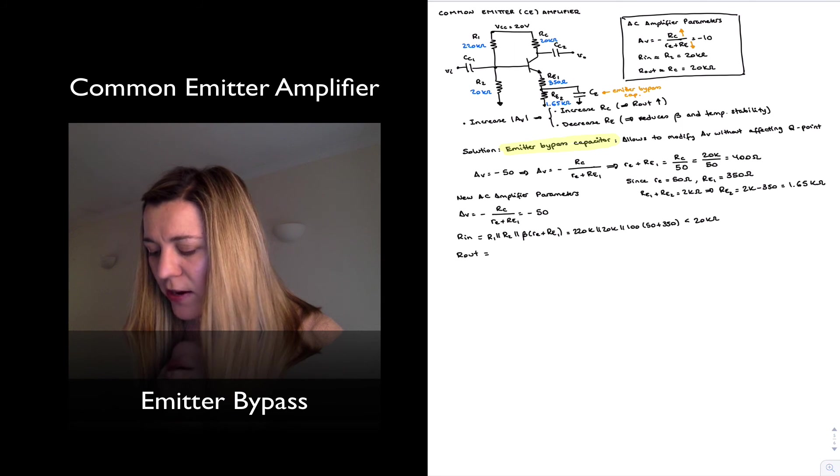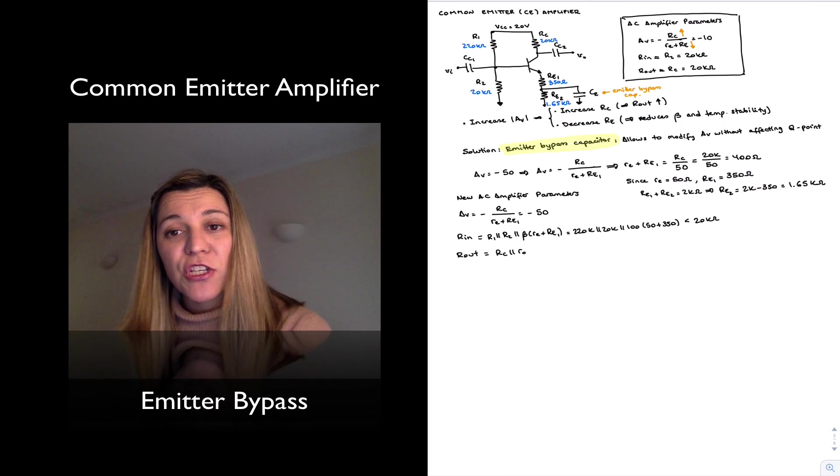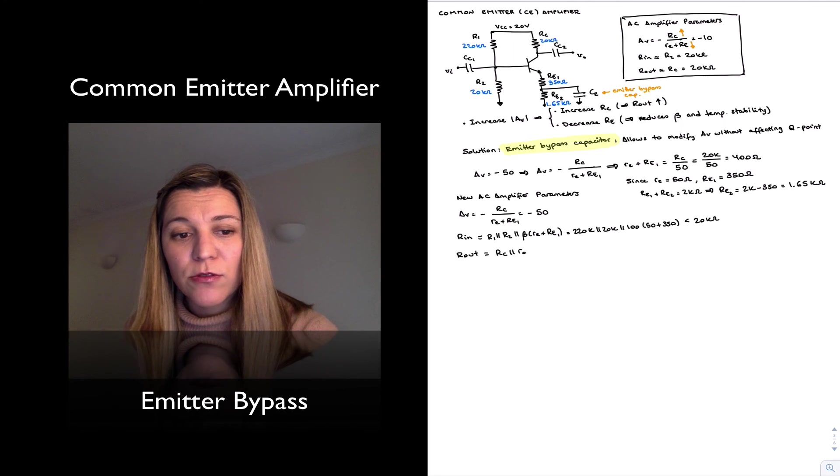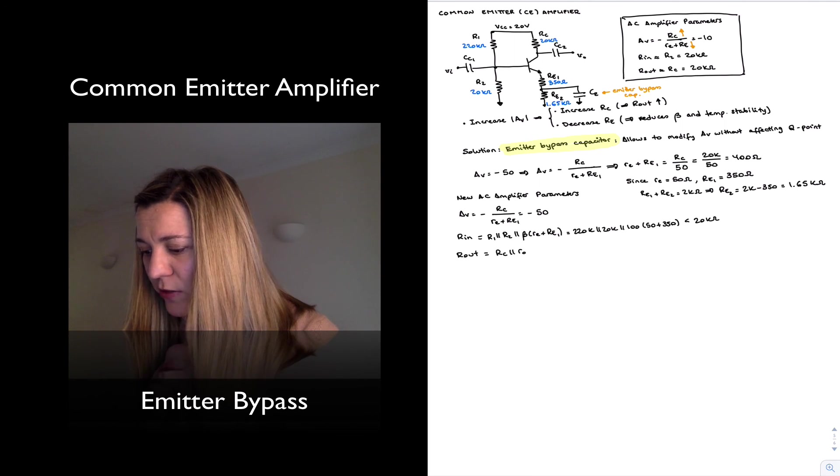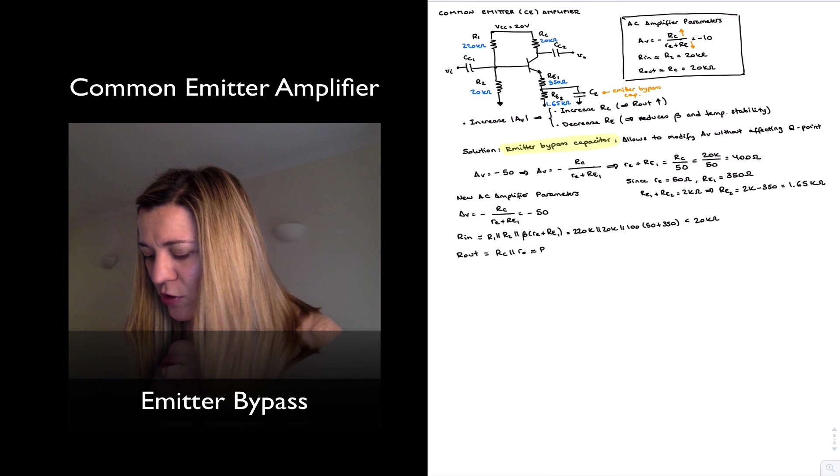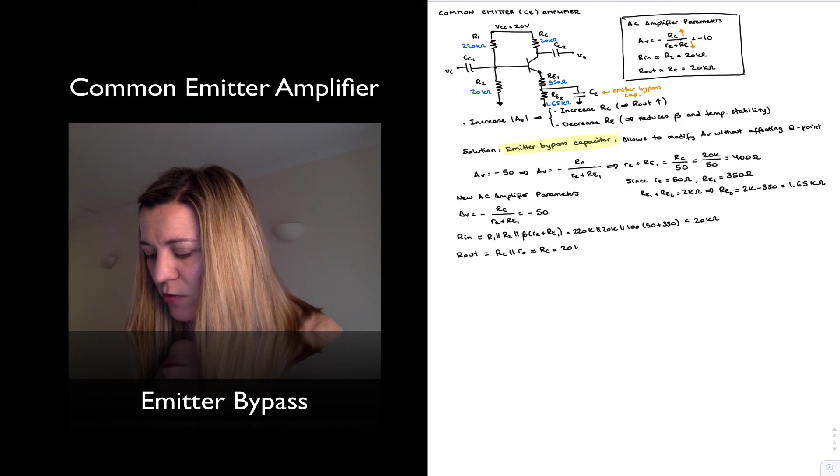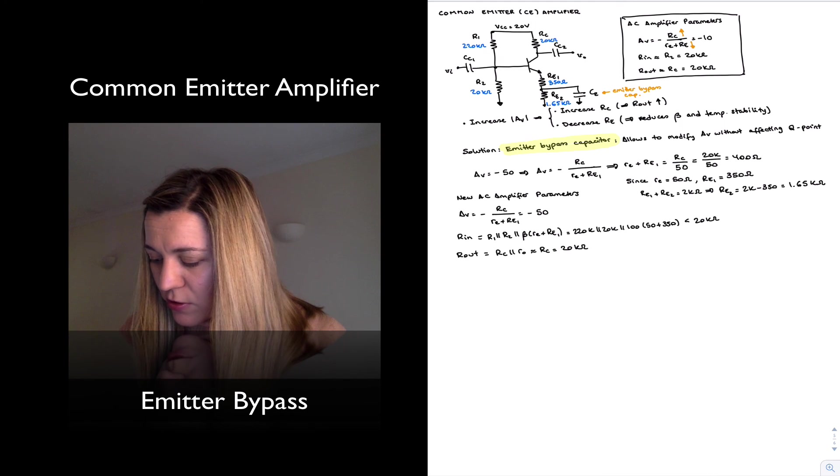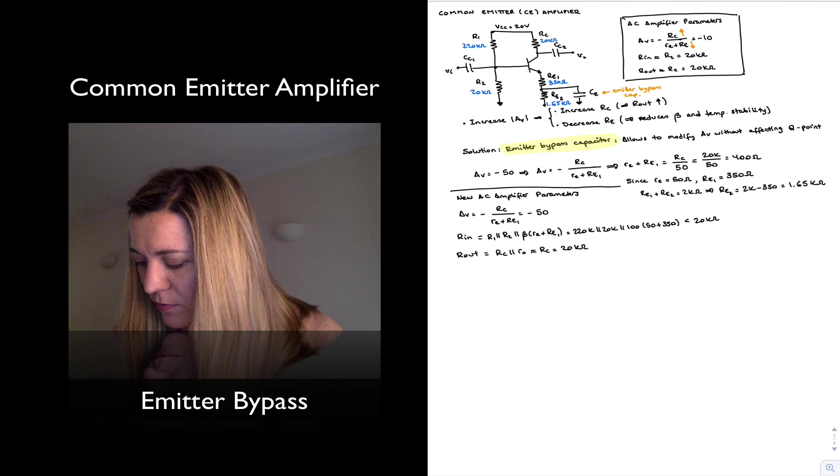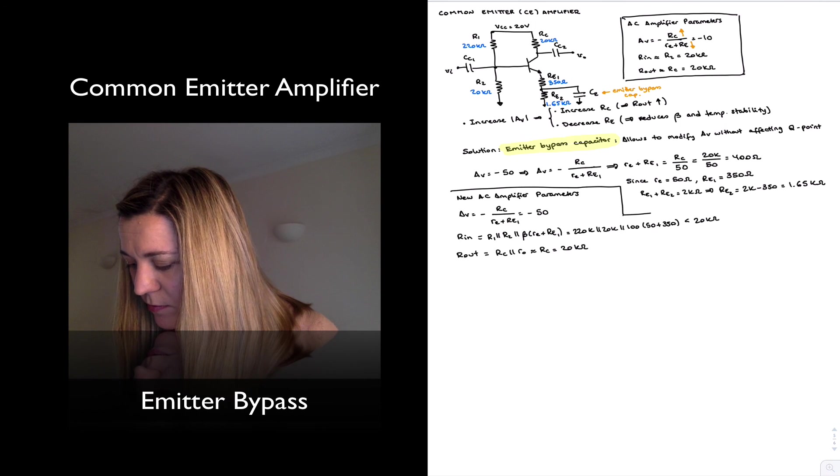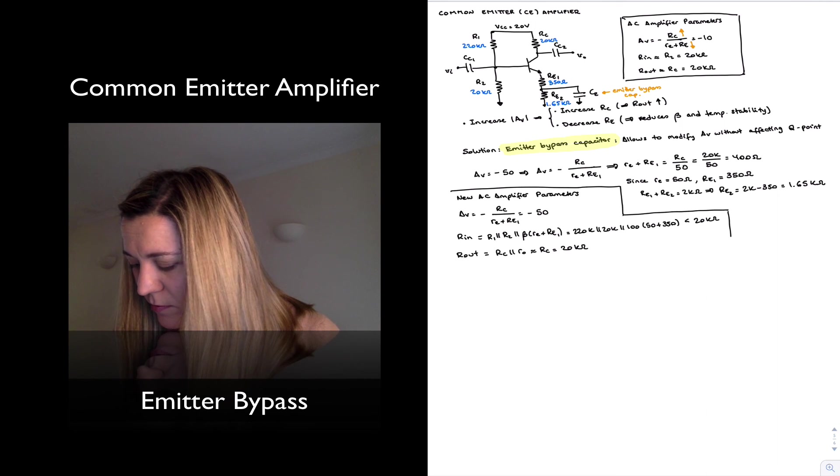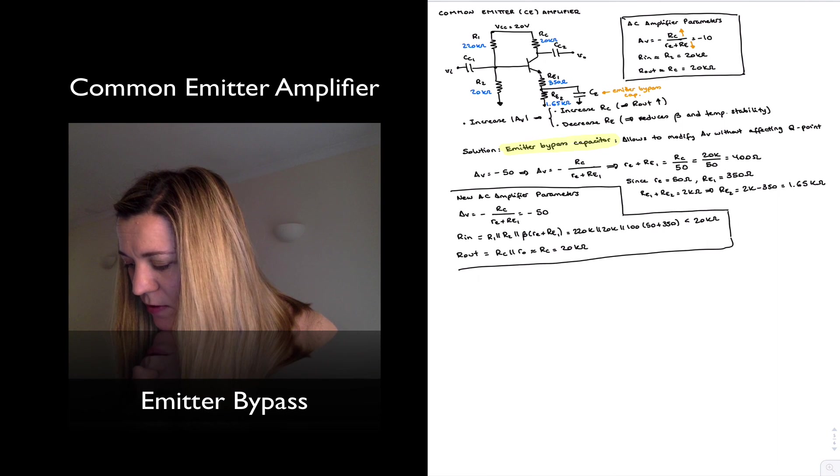And R out, it's going to be RC in parallel with little R0. Nothing has changed in terms of R out because RE does not play a role into it. And so it's still approximately equal to RC or approximately equal to 20K. So this is our new amplifier parameters for our circuit.